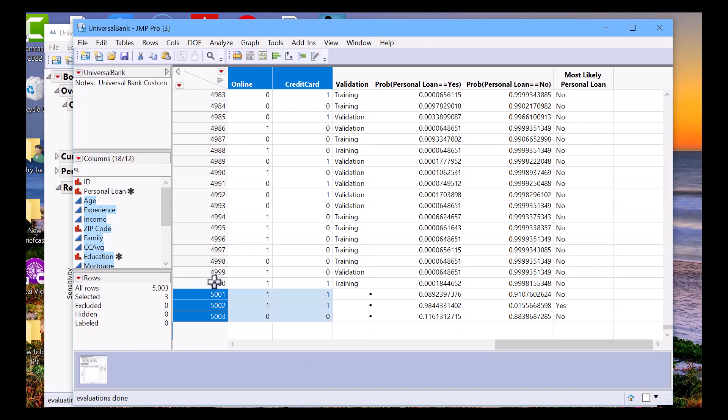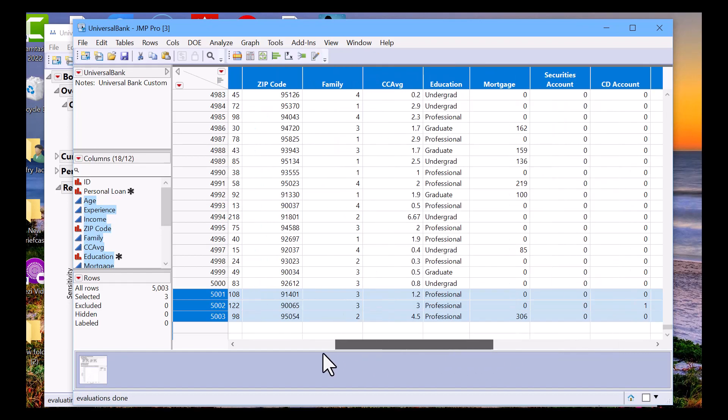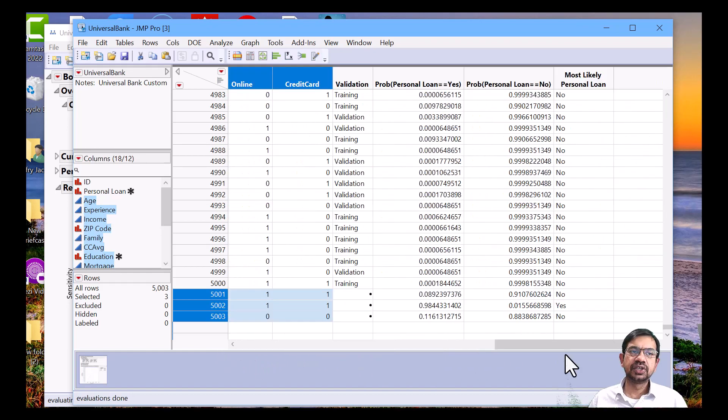So we see that for the first record, they're predicted to not accept the loan. The second record will accept the loan, and the third record will not accept our loan. This is how we would score new data using random forest: we save the prediction formula, and then we can just copy and paste the new records that we have, and the model will classify them as a yes or a no.